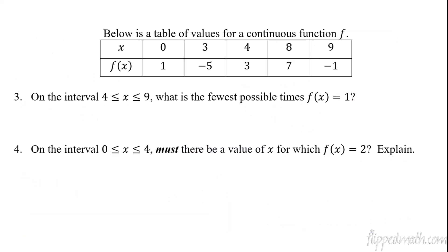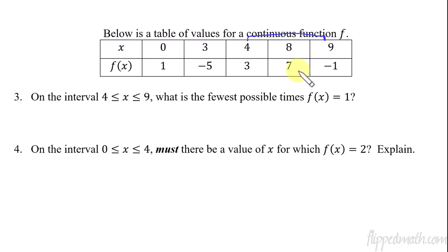Sometimes you'll have a table, and you use the Intermediate Value Theorem a little differently. On the interval 4 to 9, what is the fewest possible times that f(x) equals 1? Going from 3 to 7, it's possible y equals 1, but we don't know for sure — there's no guarantee. But going from 7 down to negative 1, at some point it has to equal 1 — it's going to cross the y value of 1. So the answer is just one time; we know for sure it crosses y equals 1 at least once. That's using IVT without writing out all the formal justifications.